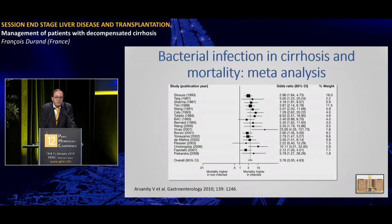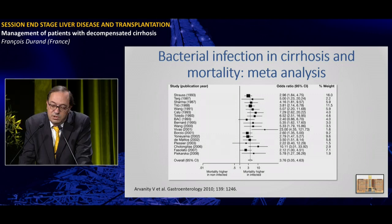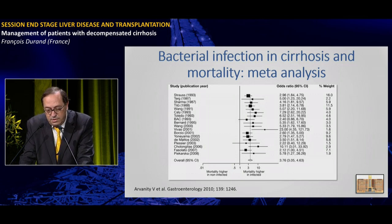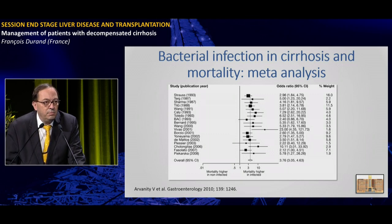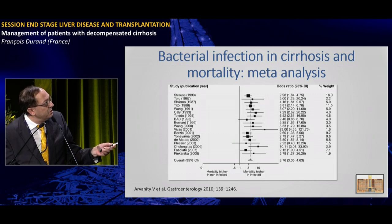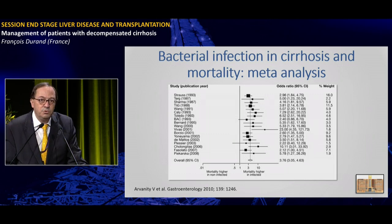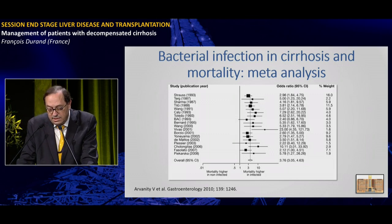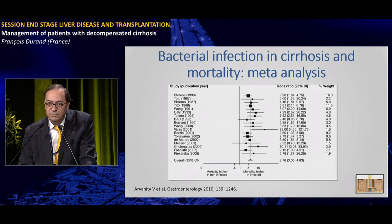Bacterial infections are very common in patients with cirrhosis, and even more common in patients with decompensated cirrhosis. Bacterial infections are associated with a high mortality rate because they are a trigger of organ failure which can lead to ACLF. Several studies have shown that bacterial infections are associated with a worse prognosis, confirmed by a meta-analysis.